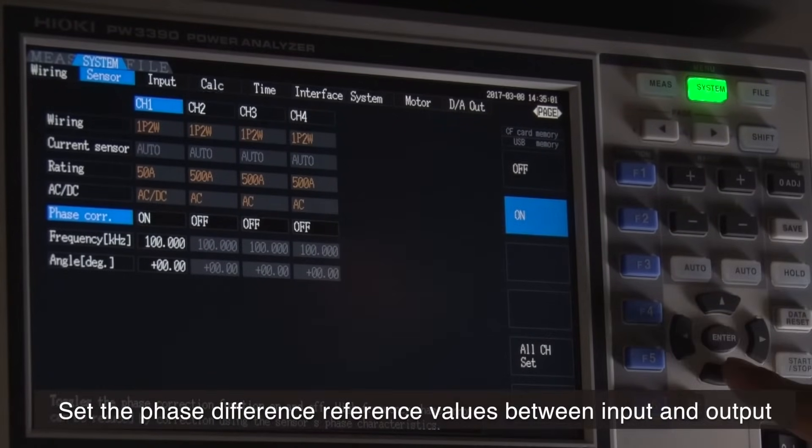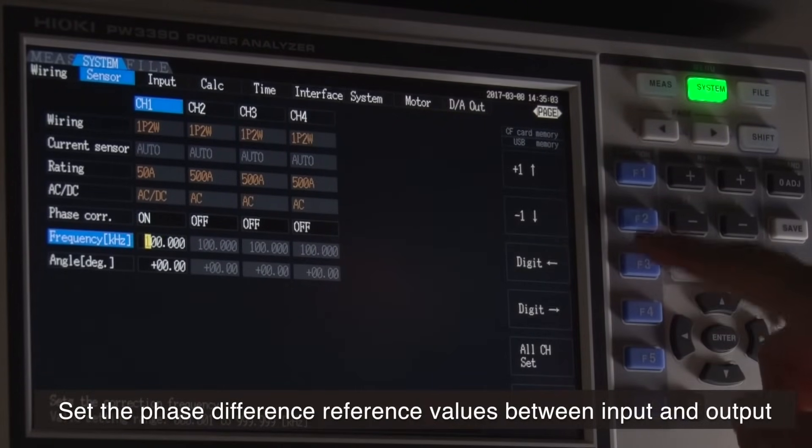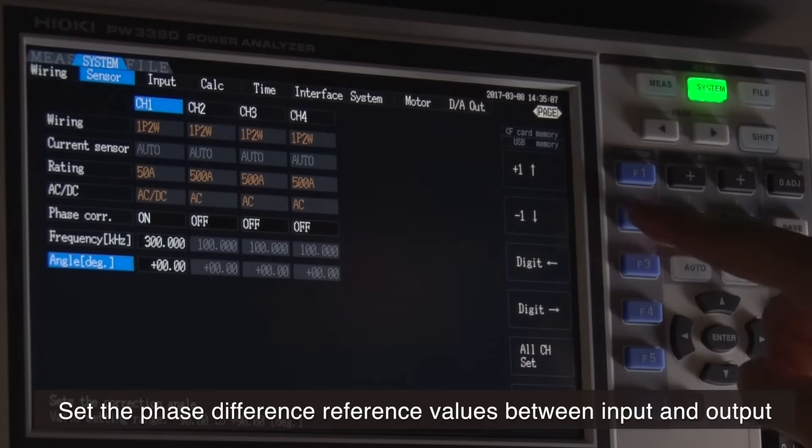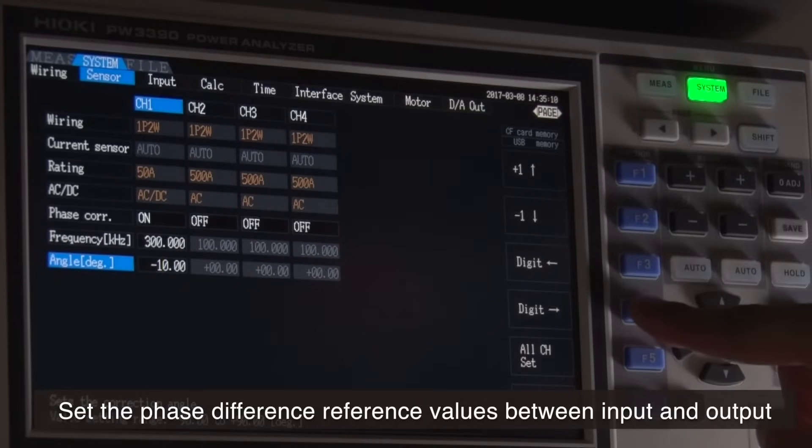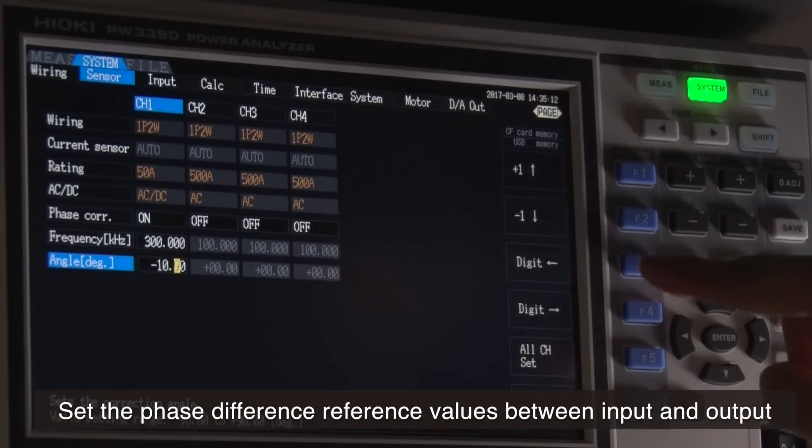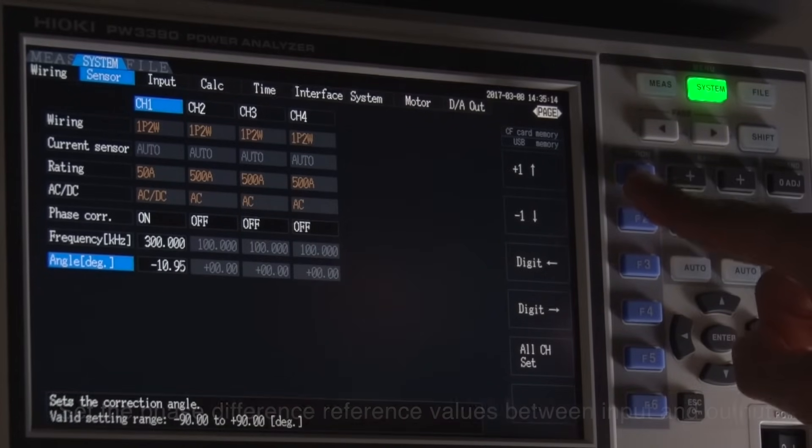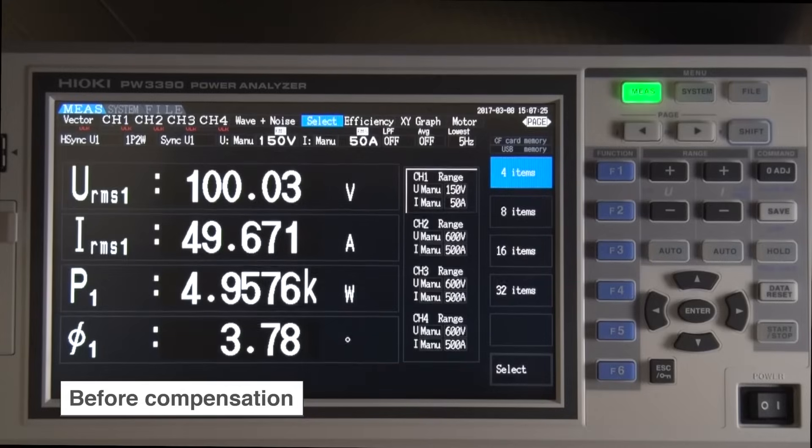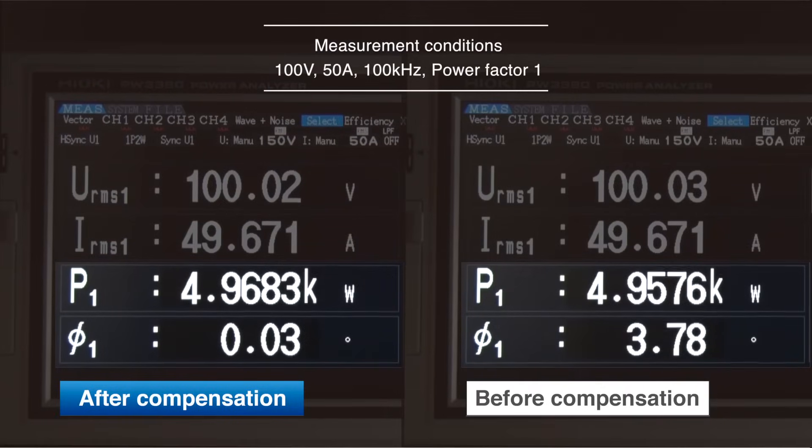Here, let's set the phase difference reference values between input and output. As you can see, the measured voltage and current do not change after the phase shift compensation, but the power and phase angle clearly show the current phase shift function at work.